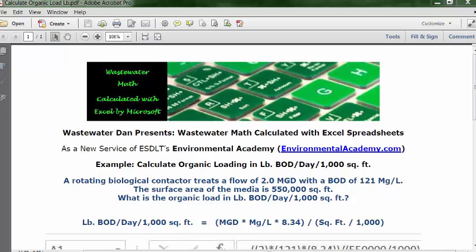Today's problem reads: a rotating biological contactor treats a flow of 2.0 MGD with a BOD of 121 mg/L. The surface area of the media is 550,000 square feet. What is the organic load in pounds of BOD per day per 1,000 square feet?